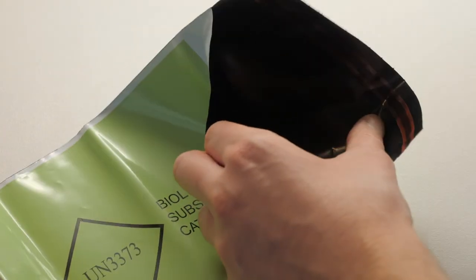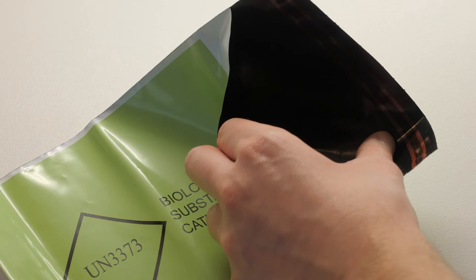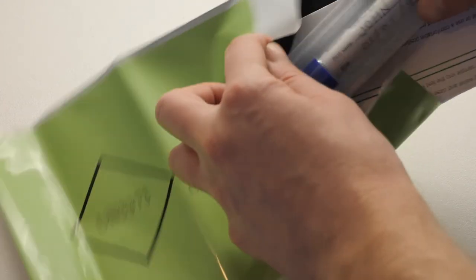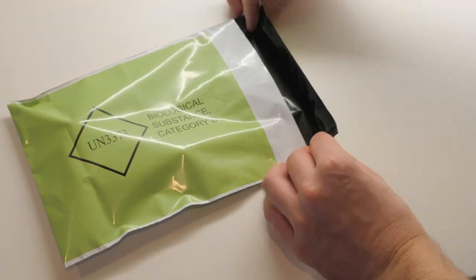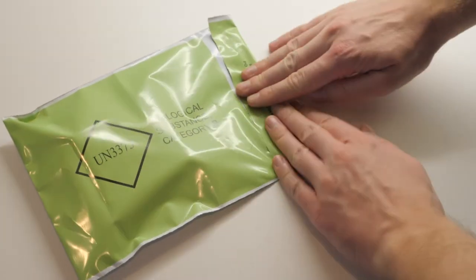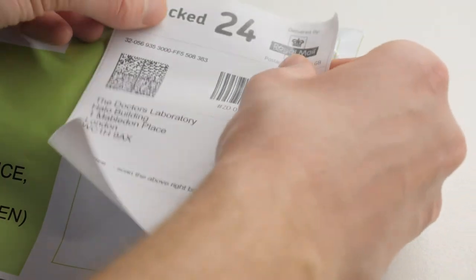Once sample and form are ready, place them both inside the green polyvinyl bag enclosed with each screening tool. Seal the bag and post. Each bag bears a first class postmark and is addressed to the TDL processing laboratory.